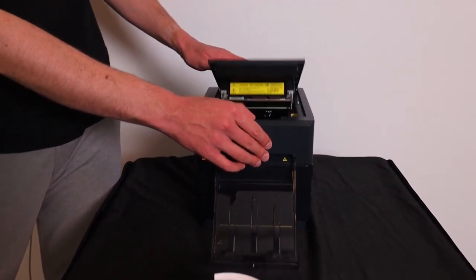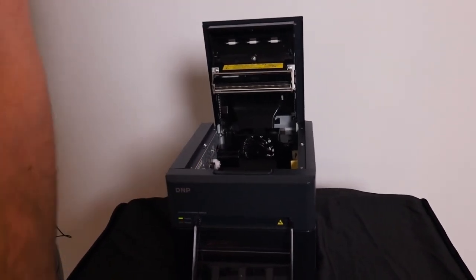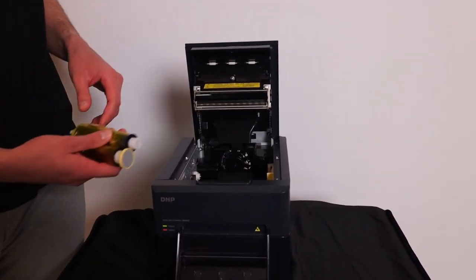There is a lever for that. We press it. The top flap comes up like this, and then we can only place the ribbon in the printer in one way.